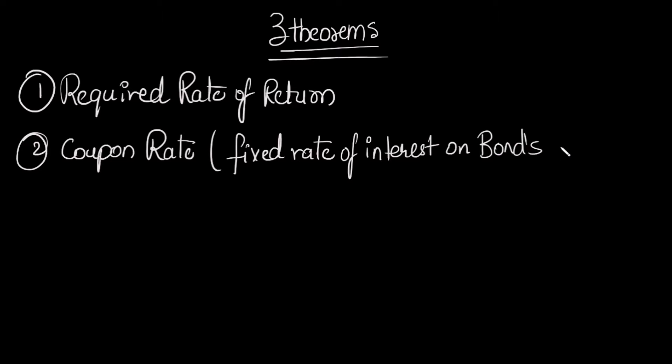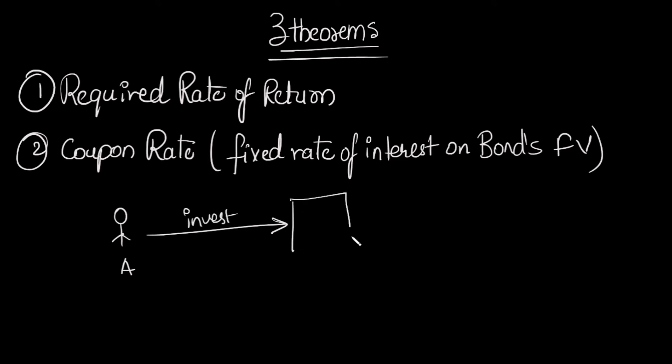Coupon rate is the fixed interest on a bond's face value. Face value is the value at which bonds are issued by a firm or the government, and according to that face value they issue a fixed rate of interest called the coupon rate. Required rate of return is the interest rate that a person who is investing is expecting — the minimum return an investor expects.